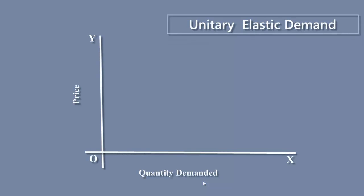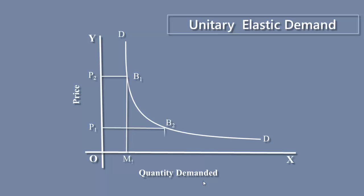Unitary elastic demand refers to a situation where a percentage change in price brings out exactly an equal percentage change in quantity demanded. The demand curve is non-linear; the shape of the curve is known as a rectangular hyperbola. When the price falls from P2 to P1, the fall in price is 30%, and due to this, quantity demanded increases by 30%, moving up from M1 to M2.